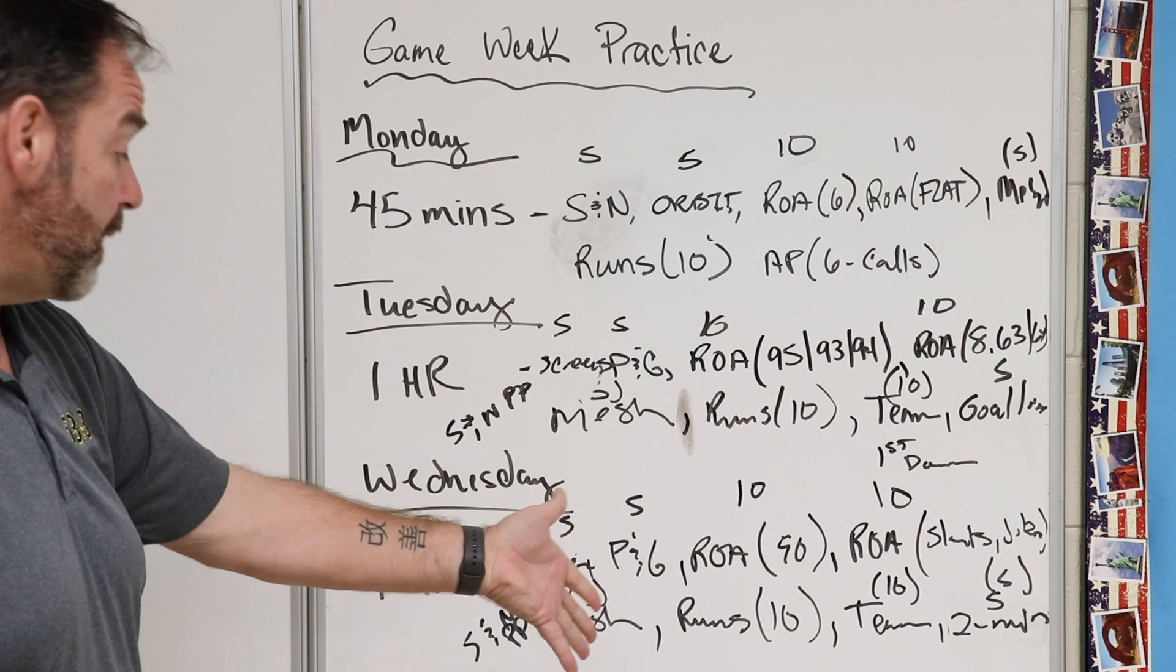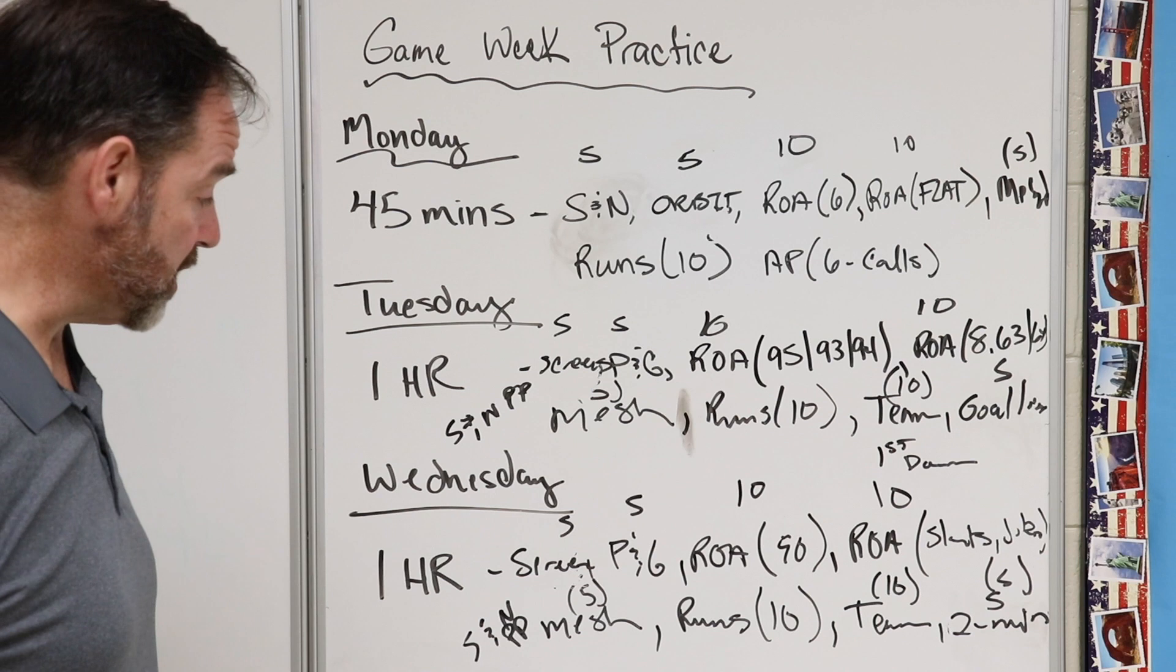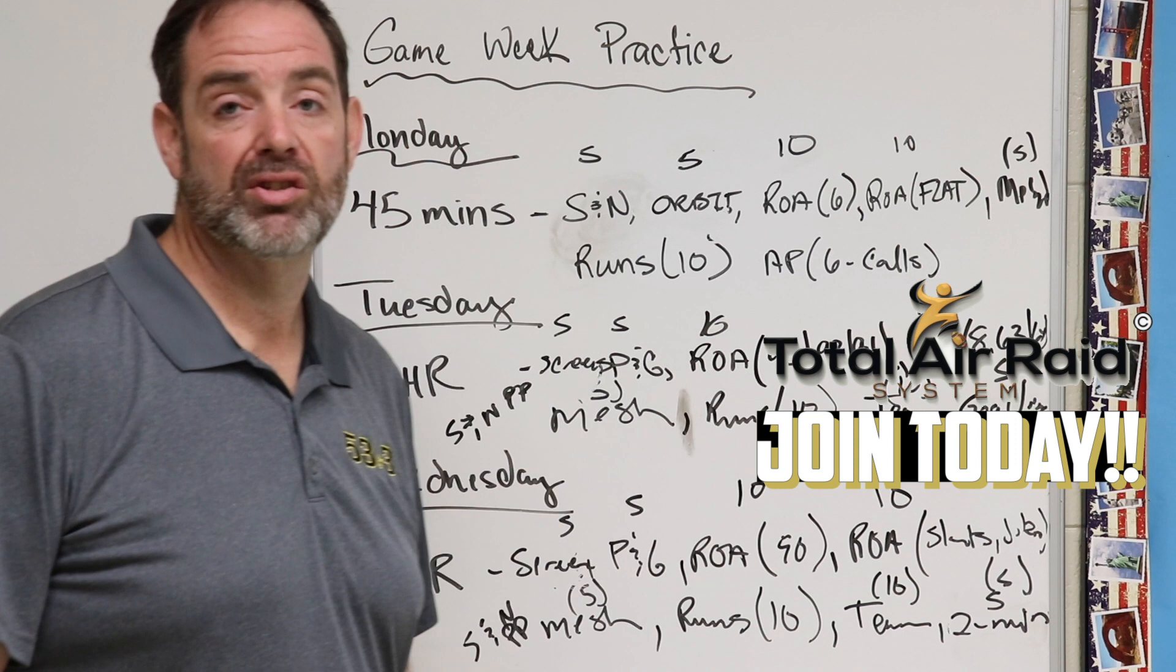On Wednesday it's pretty much the same thing. Screens, pat and go, routes on air with shallows, routes on air with slants, and the backside of the quick. Then we'll do our mesh period, and that's when we do cougar, the two outs from Washington State. And then we'll do our runs, which is a little bit more of our RPO. And then in team we're going to look at third down conversions, so everything is, hey, let's convert these third downs. And then our specialty period on Wednesday is going to be our two-minute game, so we'll do a five-minute, two-minute period and also do settling noose.